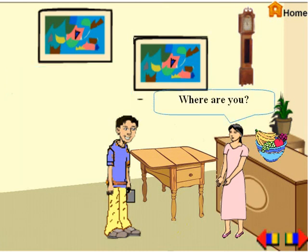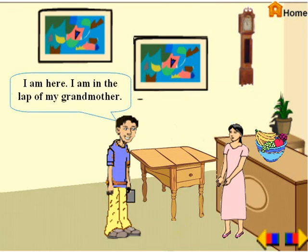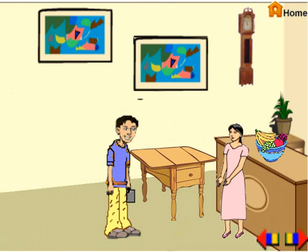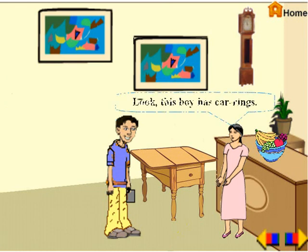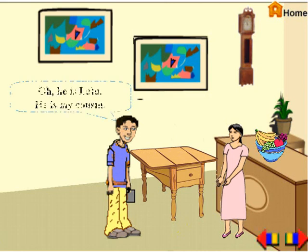Where are you? I am here. I am in the lap of my grandmother. Look, this boy has an earring. Oh, he is Lalu. He is my cousin.